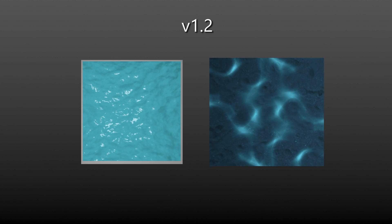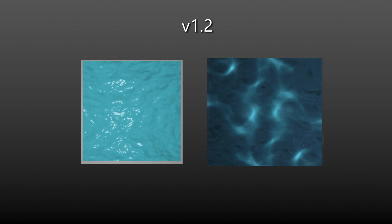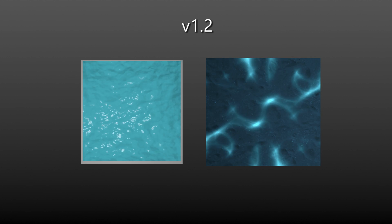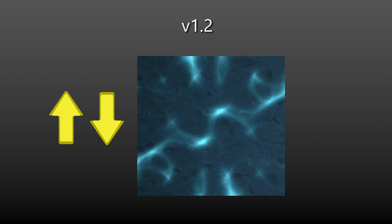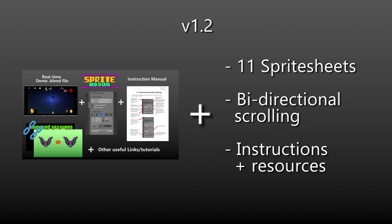Shortly after I released version 1.1, I noticed it was quite difficult to get scrolling working in different directions for things like water and caustics, which I use very frequently in video games. Basically, it's when you have a texture going in one direction and another texture underneath going in a different direction, giving you that chaotic movement water typically has. So I modified the code, added an example file and instructions, and released it as version 1.2.